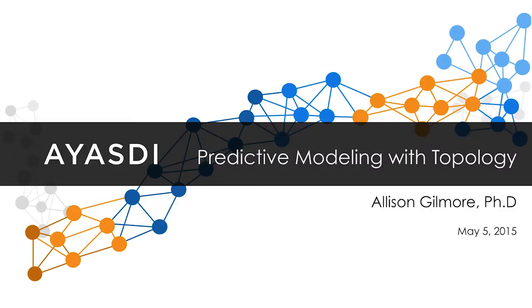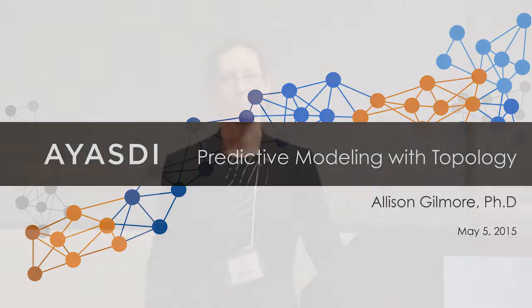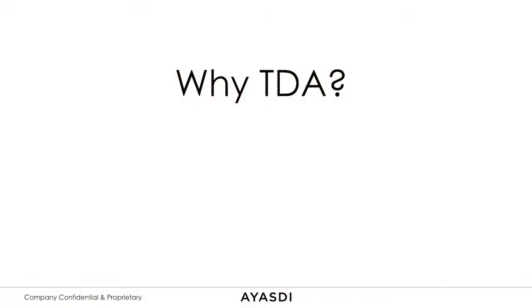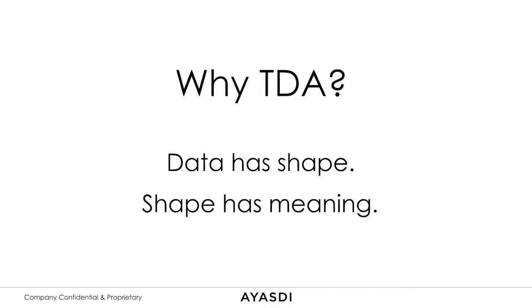My topic for the day is about predictive modeling with topology. Topology is a field of mathematics, sort of like geometry — it's concerned with the study of shape. Shape is not usually the way that we think about data, but the first thing I want to convince you of is that shape actually is the way to think about data. It's the shape of data that carries its meaning. At IASI, we do something called topological data analysis, or TDA, and it's based on this premise that data has shape and the shape has meaning.